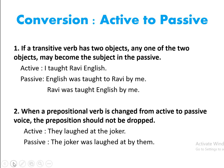Now let us try to understand the conversion from active to passive. If a transitive verb has two objects, any one of the two objects may become the subject in the passive. For example, 'I taught Ravi English.' The passive will be 'English was taught to Ravi by me' or 'Ravi was taught English by me.' So the transitive verb has two objects — Ravi and English — and any one of the objects can become the subject in the passive voice. Both are correct.